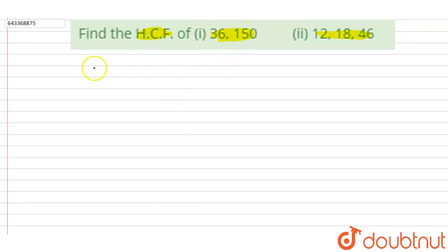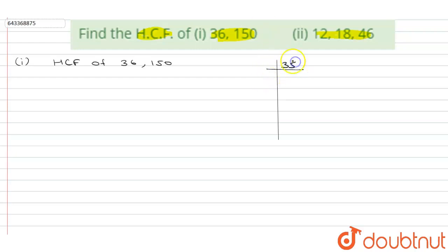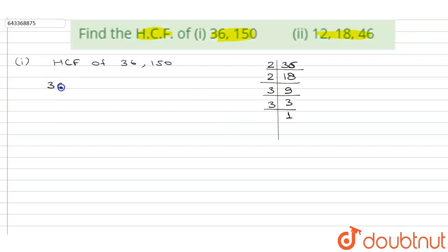Let's start the solution. We have to find the HCF of 36 and 150. First, we'll factorize 36. Since 36 is divisible by 2, we divide it by 2 to get 18. Again 18 is divisible by 2, so we divide by 2 to get 9. Then 9 = 3×3. So the factorization of 36 is 2 × 2 × 3 × 3.